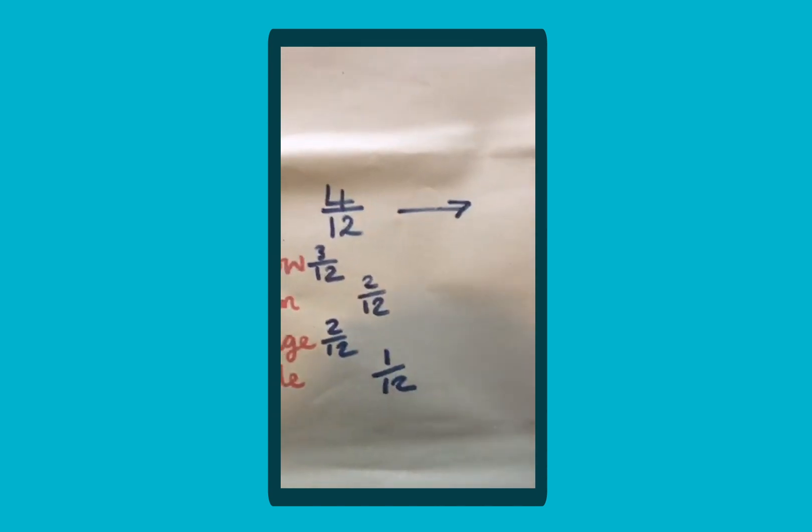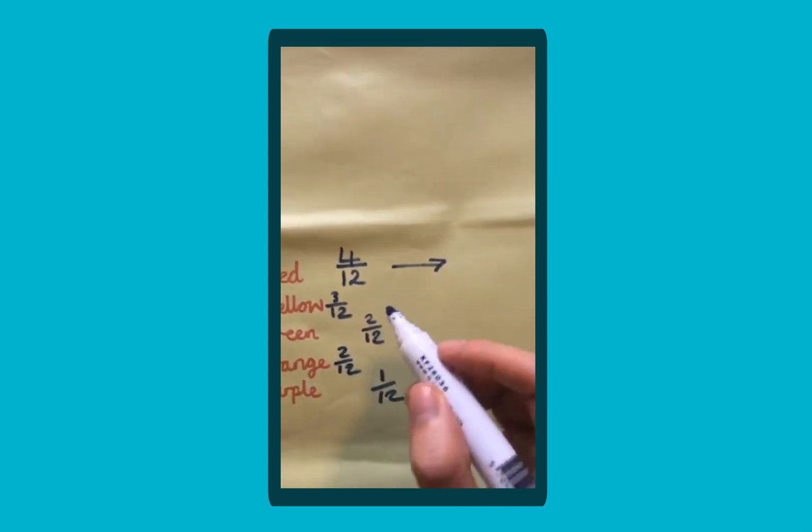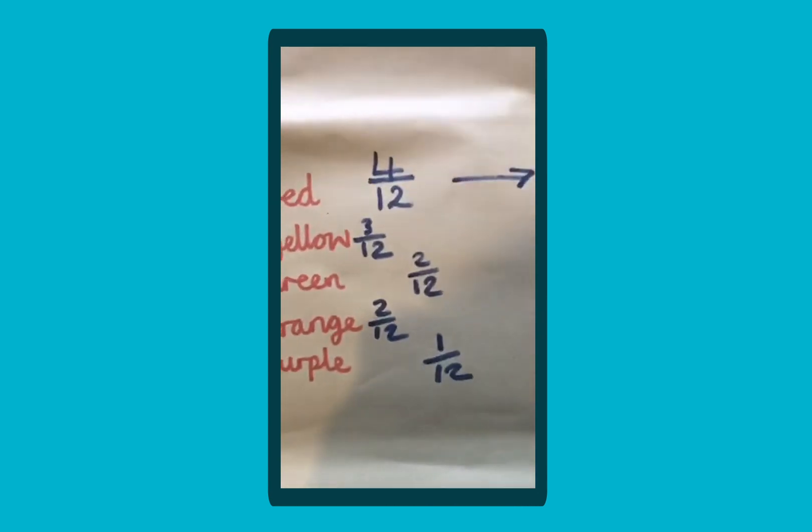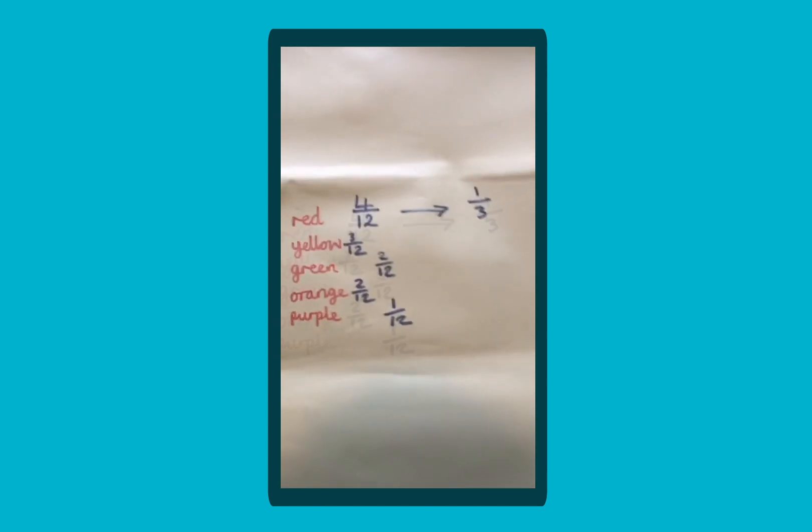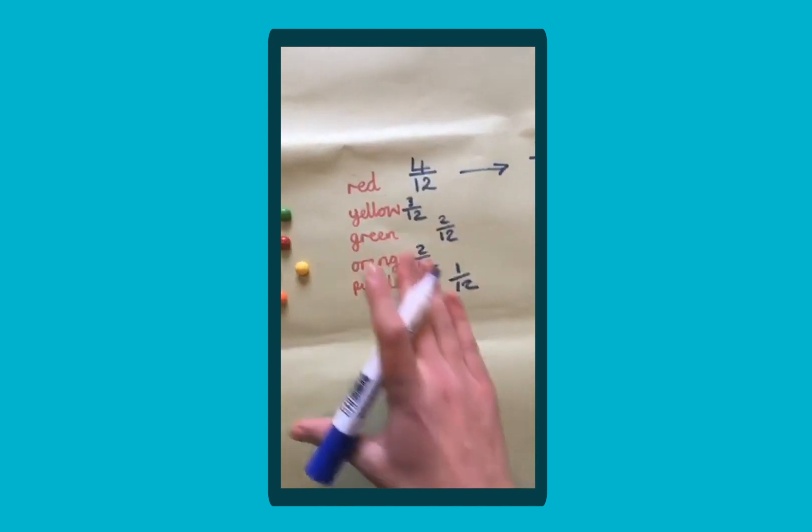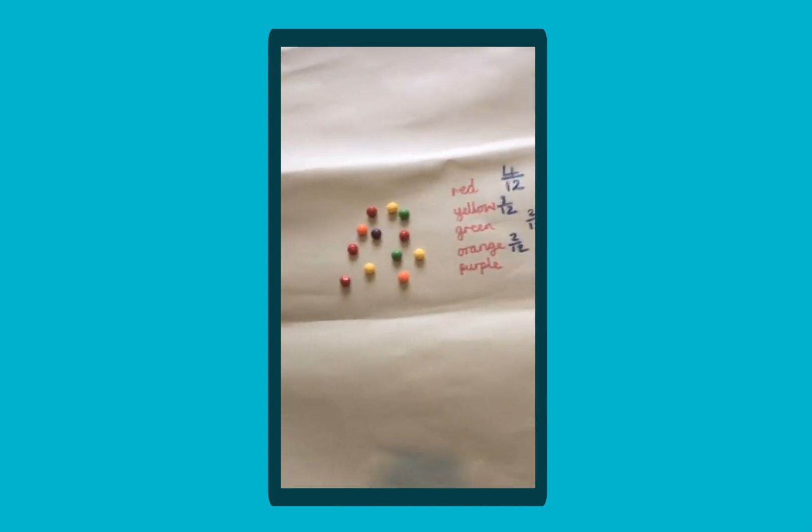And both of these numbers are divisible by four, so four twelfths is one third. So four twelfths simplifies into one third. You could repeat that for the whole of your set also.